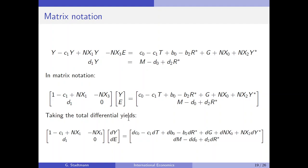We have taken the total differential and written a D in front of each variable. For example, in the term minus C1·T, we write a D in front of T because T is a variable, while C1 is a parameter. Similarly, in NX2·Y*, Y* is a variable so we write D in front of it, but not in front of the parameter NX2.